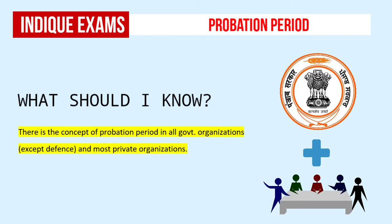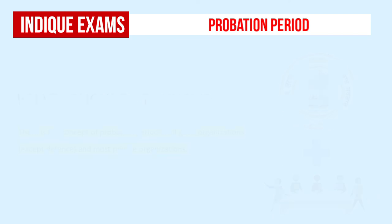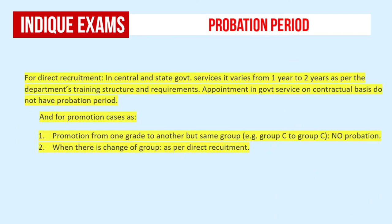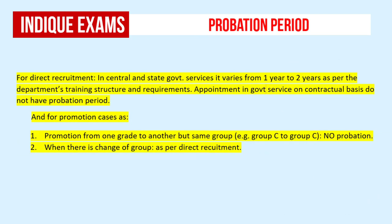How long is the period of probation? For direct recruitment in central and state government services, it varies from 1 year to 2 years as per the department's training structure and requirements.